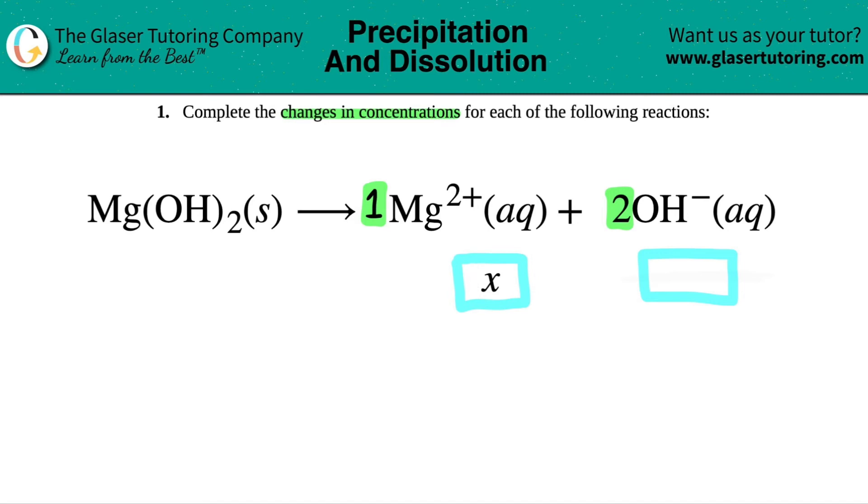But for any other number, I have to state what it is. So this would be 2x, which means that this changes twice as much as the Mg2+ would. This would increase twice as much, whatever the number is, as the Mg2+. And that's it.